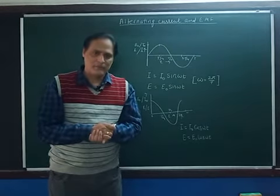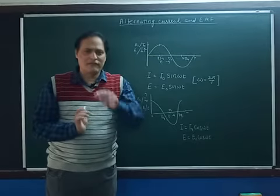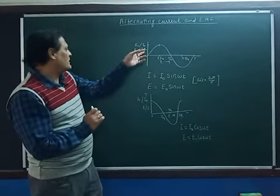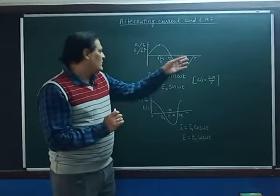We use the concept of mean current or RMS current. Mean current is not useful because the total current of a complete cycle becomes zero—the value in the second half is in the opposite direction, so the average current is zero. There is no use of mean current in measurement.